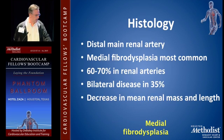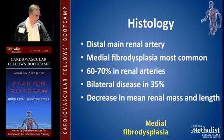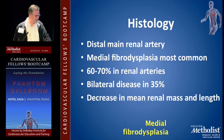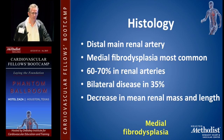Physiologically, FMD is often found in the distal main renal artery, which is one of the most common sites. Medial fibromuscular dysplasia is the most common type, occurring in 60% to 70% of renal arteries, with bilateral disease in 35%. You can also see a decrease in mean renal mass and length.